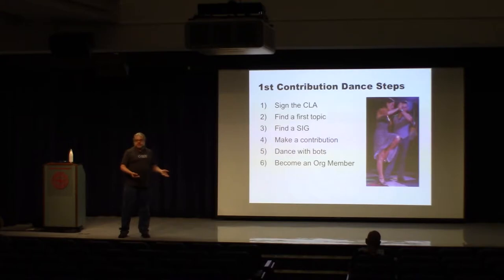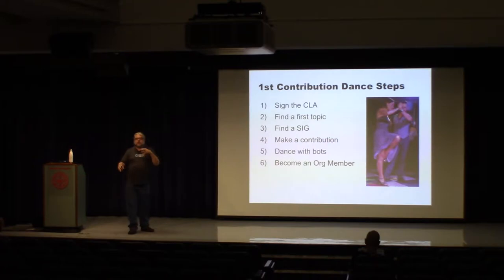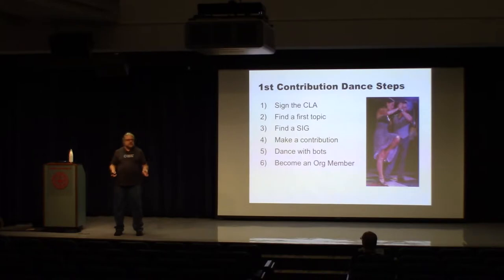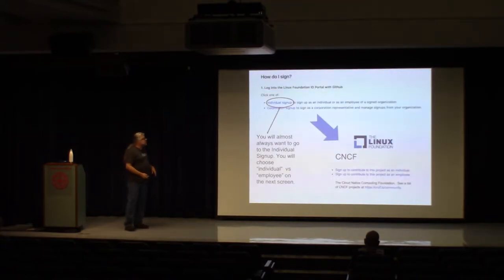We can break down what happens when you want to contribute to Kubernetes into six steps. One: we're a foundation project, we have a CLA for anything you're going to do on GitHub. Two: find a first topic, a first thing you want to get involved with. Three: find a SIG, which I'll explain in a minute. Four: make a contribution. Five: spend a lot of time arguing with bots, because we rely on bots for GitHub automation heavily. Six: become a Kubernetes org member.